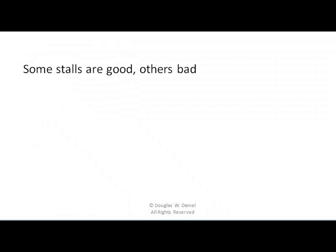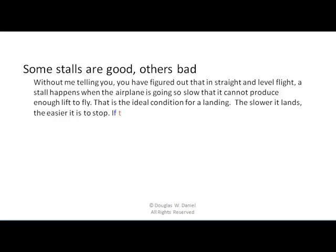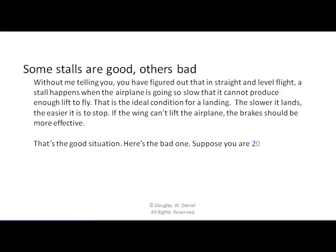Some stalls are good but others are bad. Without me telling you, I suspect you figured out that in straight and level flight this all happens when the airplane is going so slow that it cannot produce enough lift to fly — because the pilot has pulled up on the nose, increasing the angle of attack until it's reached its critical angle and we get flow separation. That is the ideal condition for landing. The slower you land, the easier it is to stop. So if the wing can't lift the airplane, the brakes should be more effective. That's a good situation.